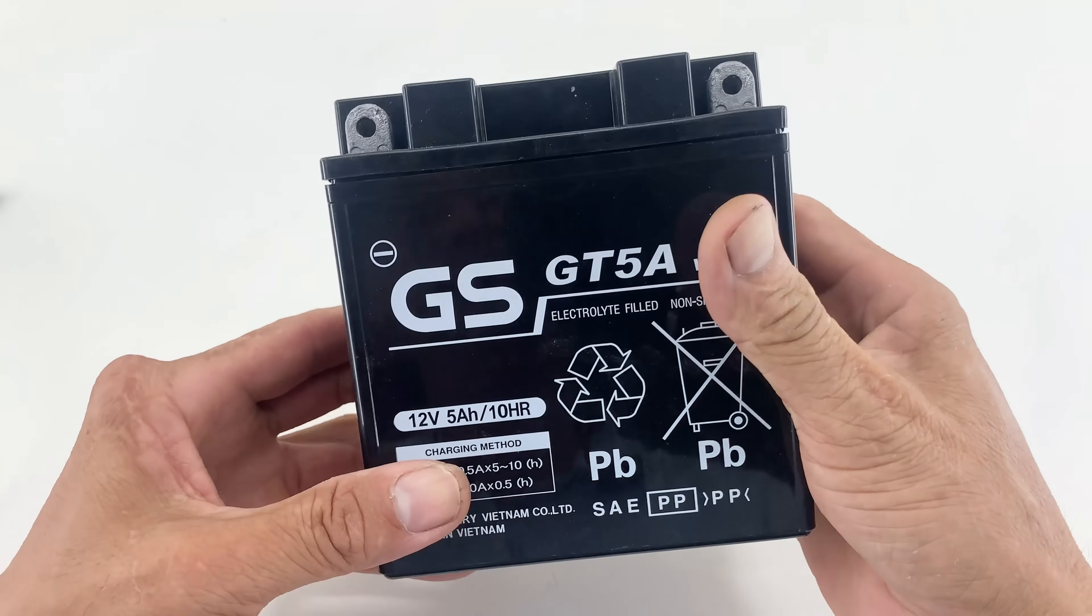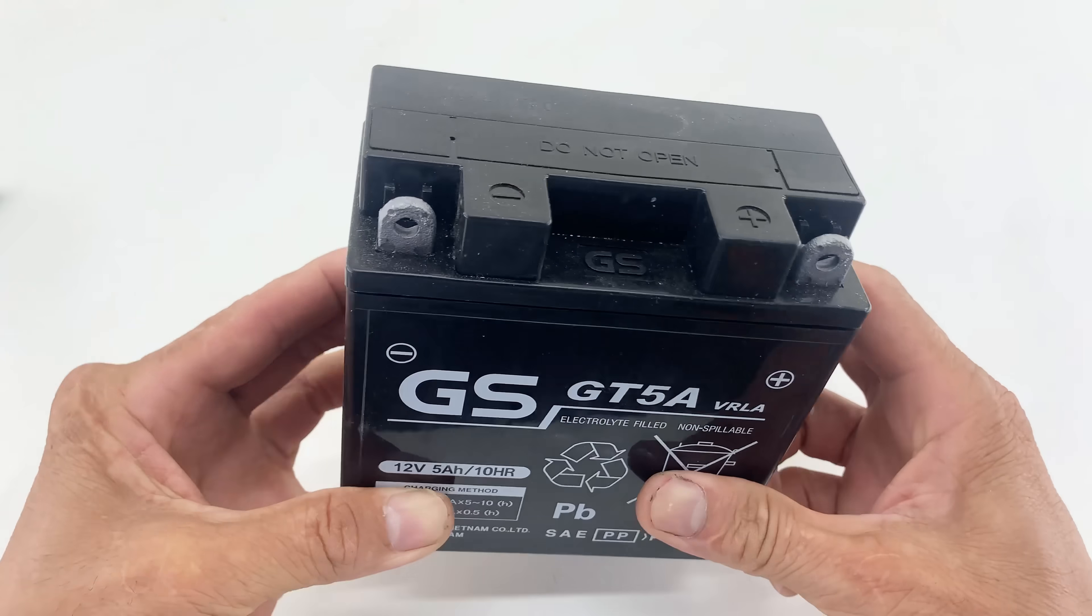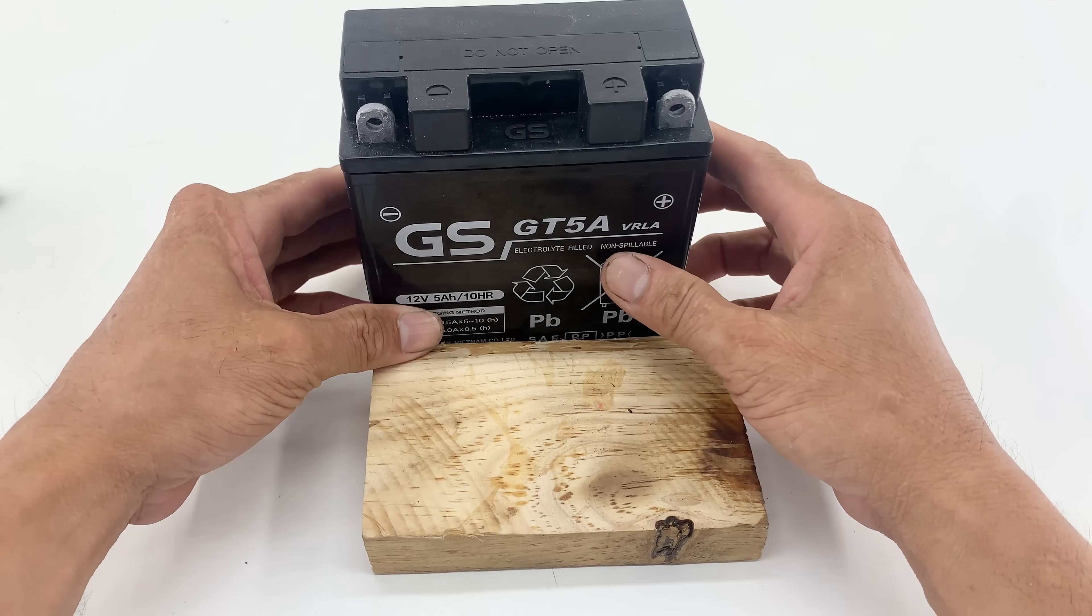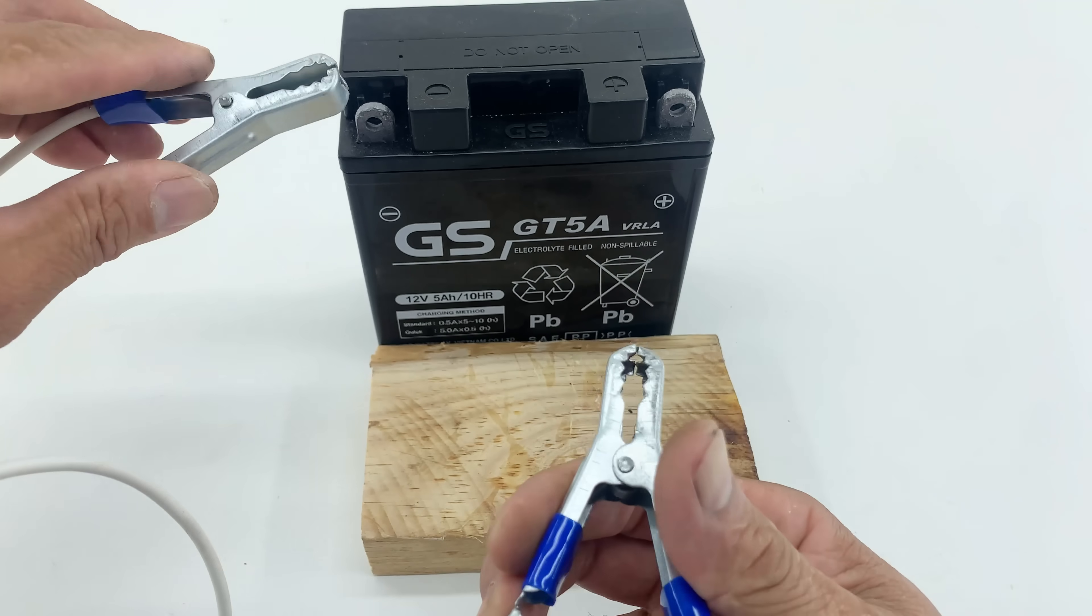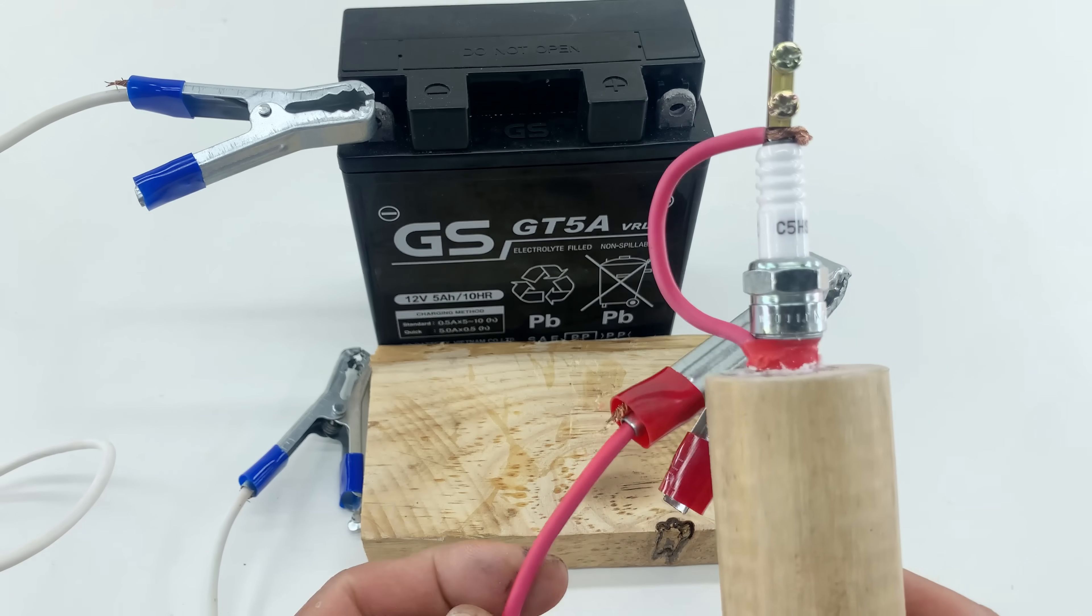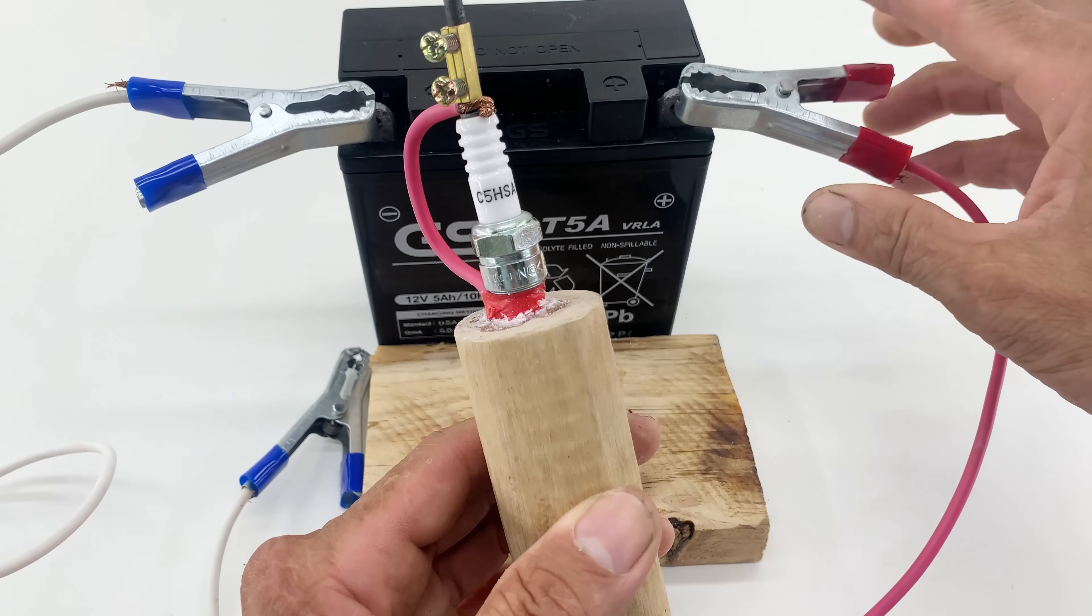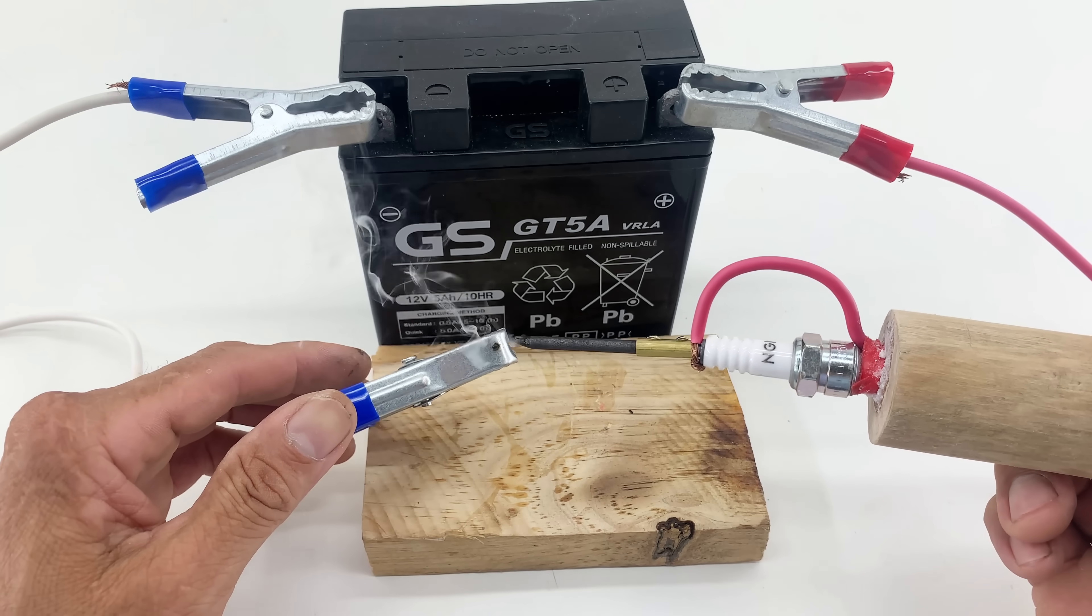Now, for the moment of truth, I have my 12-volt battery set up, ready to power our homemade soldering iron. I connect one of the blue-handled alligator clips from our prepared white cable to the negative terminal of the battery. The red alligator clip, connected to our spark plug tool, is then securely attached to the positive terminal of the battery.